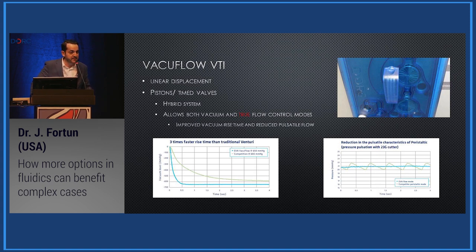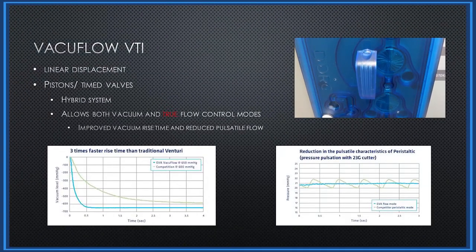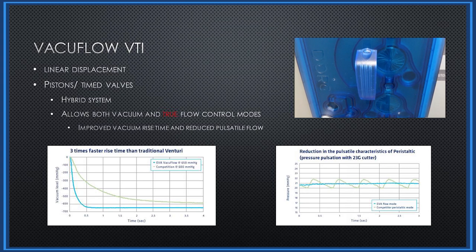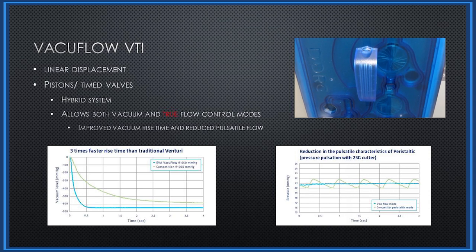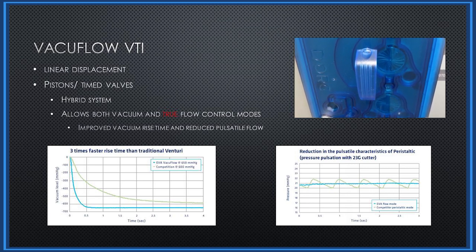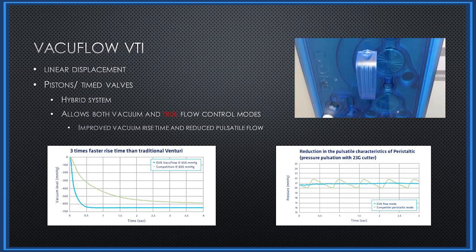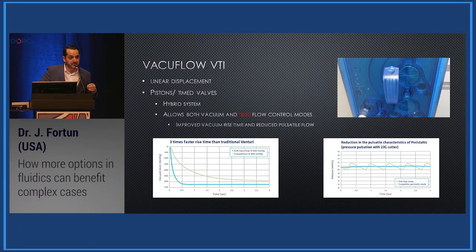What's innovative about the Dork EVA is a system called Vacuum Flow VTI, which provides the best of both worlds for peristaltic and Venturi pump systems. It's technically called a linear displacement system consisting of pistons and timed valves — a hybrid system. It gives you a faster rise time than a traditional Venturi pump while also delivering less pulsatile flow than a peristaltic system. Not only does it combine the best of both, it improves on both in significant ways.